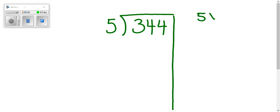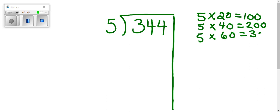So you're thinking to yourself, okay well I know 5 times 20 is 100, and I know 5 times 40 is 200, and I know 5 times 60 is 300. That's pretty close, so let's go with that.